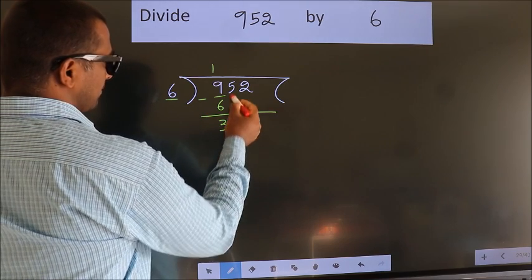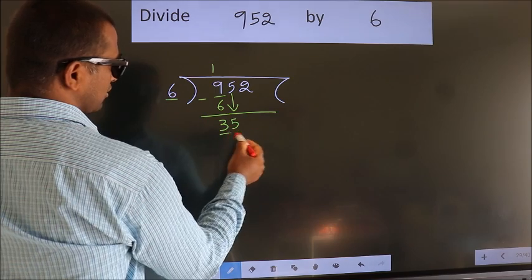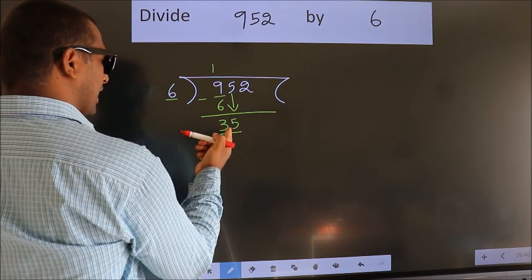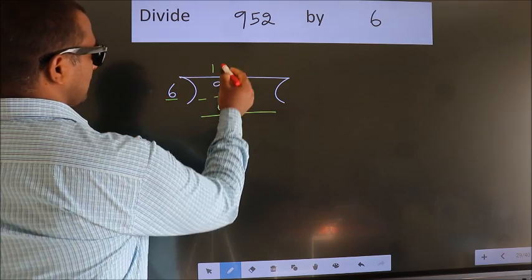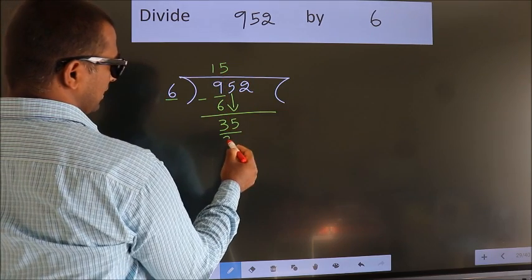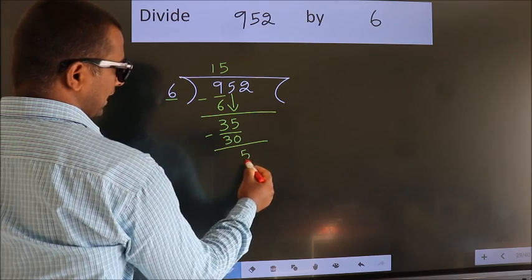After this, bring down the next number. So 5 down. So 35. A number close to 35 in the 6 table is 6 times 5 is 30. Now we subtract. We get 5.